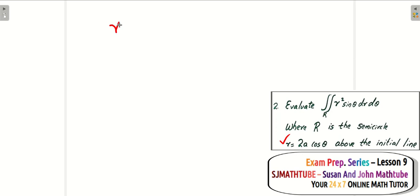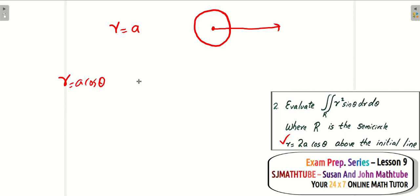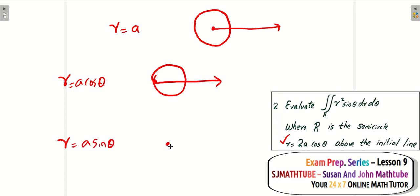I will introduce you to three circles. r equals a is a circle with center at the pole and radius a. r equals a cos theta is a circle that passes through the pole with diameter a units. And r equals a sin theta is also a circle that passes through the pole with diameter a units. You should be very good with these three graphs.